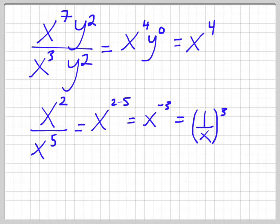And then we can simplify that. Because this 3 can go to each one of these. So it can become 1 to the 3 over x to the 3. And of course, 1 to the 3 is just 1 over x to the 3.